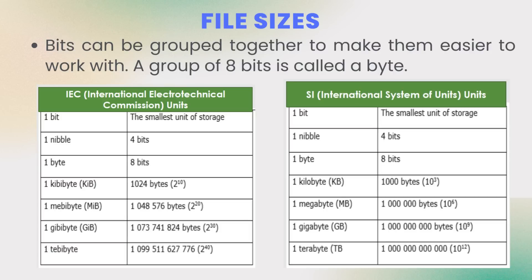One kibibyte — uppercase K, lowercase i, uppercase B — has 1024 bytes, that is 2 to the power 10. In the second table, one kilobyte — uppercase K and uppercase B — has 1000 bytes. In the exam, check what unit they refer to. If asking for kibibytes, use 1024 bytes per kibibyte; if asking for kilobytes, use 1000 bytes. The same concepts apply for megabyte, gigabyte, and terabyte: 1000 kilobytes is 1 megabyte, 1000 megabytes is 1 gigabyte, and 1000 gigabytes is 1 terabyte.